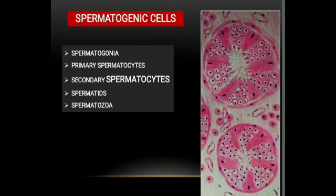Next, let us learn about the various types of spermatogenic cells. The first are spermatogonial cells, which are the stem cells from which spermatozoa are derived. These cells lie very close to the basal lamina and undergo several mitotic divisions, giving rise to more spermatogonial cells, which are then converted to primary spermatocytes. There are three types of spermatogonial cells: dark type A, light type A, and type B.